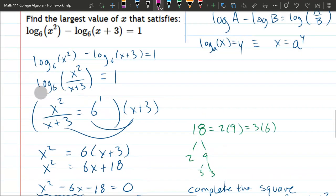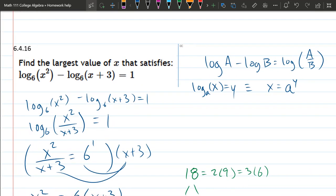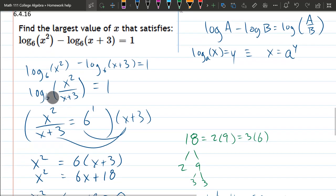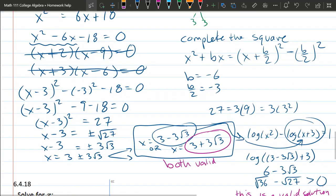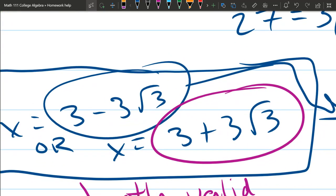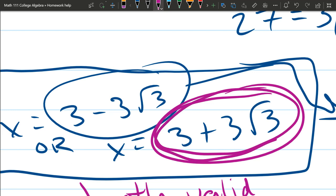And just looking at the answer one more time. Now, this says find the largest value of x. So which one is - now they don't want both, only the largest. So which one's the larger one? Should be pretty clear looking here. If you take 3 and you subtract something, that's going to be smaller than taking 3 and adding something. So this is the larger solution right here. So that's going to be the answer.